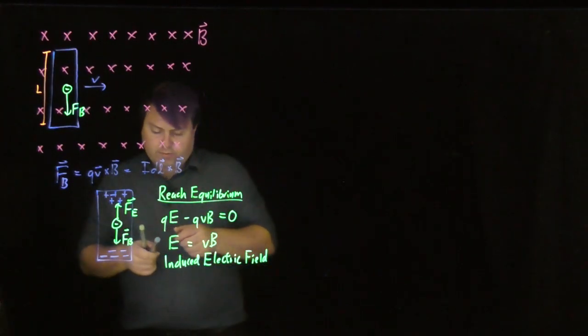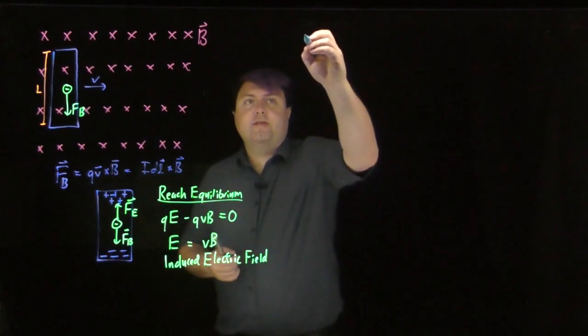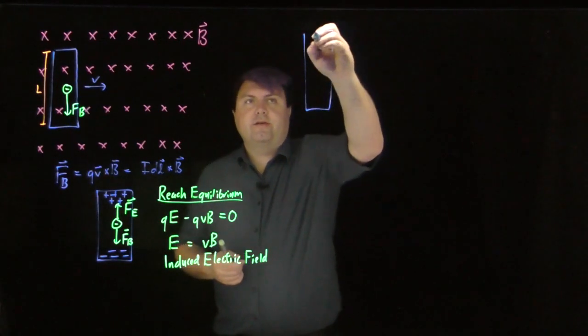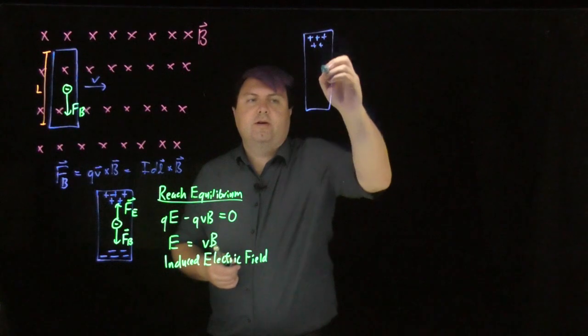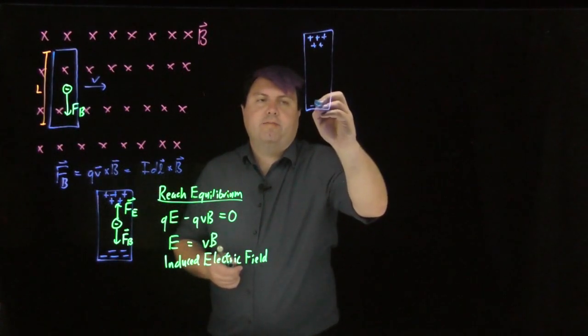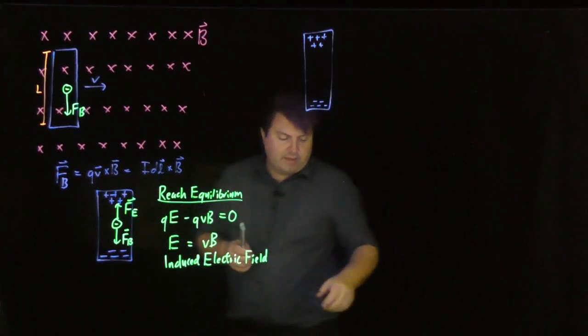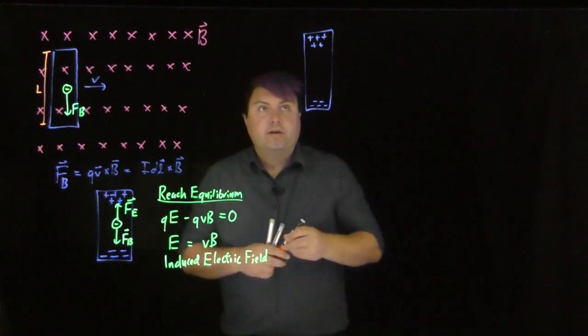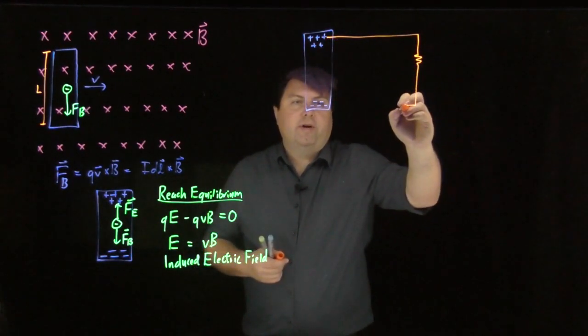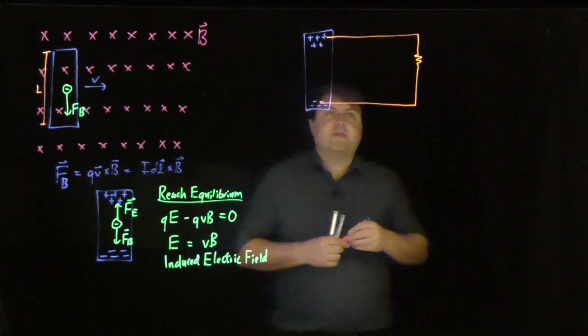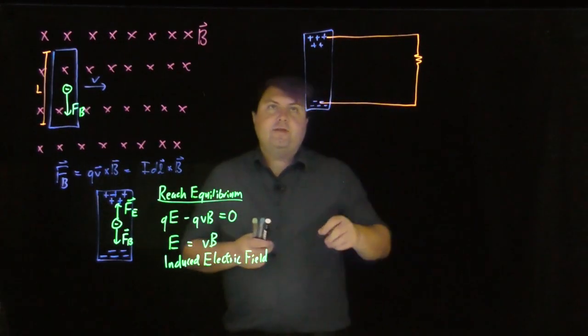So because we have objects moving in a magnetic field, we get this induced electric field fairly quickly. So what can we do with this? Well, if we have these conductors that have this charge disparity, where we have all these positives on top, all these negatives on bottom, then we could run a conductor with some small amount of resistance.